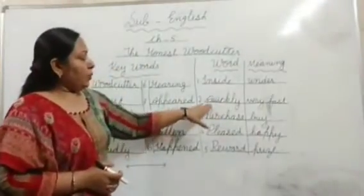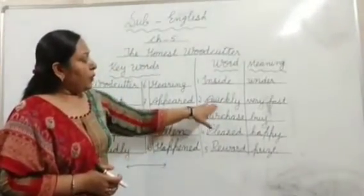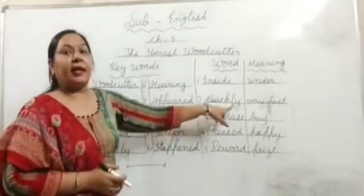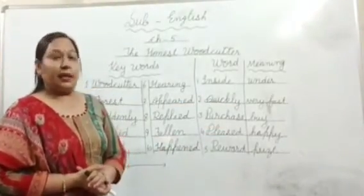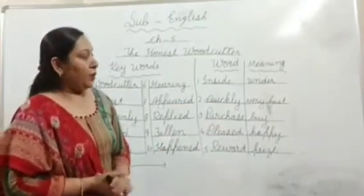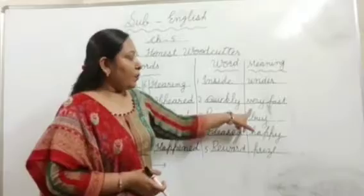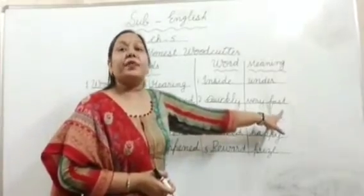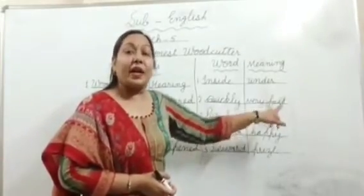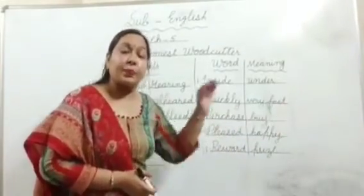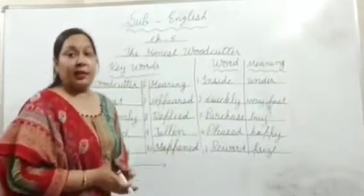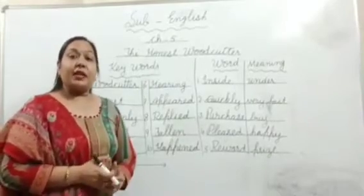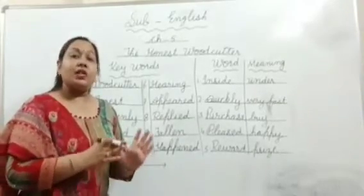Number two: Q-U-I-C-K-L-Y — Quickly. Quickly means very fast — bahut jaldi jaldi. Quickly means very fast.